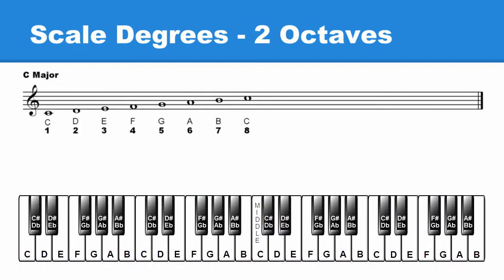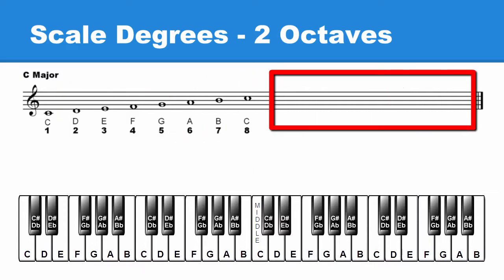We can easily add the scale degrees needed for these intervals by extending our major scale one more octave. To make a two octave major scale, we'll pick up where we left off in the one octave scale and add the same notes one octave higher.